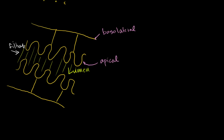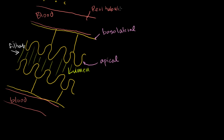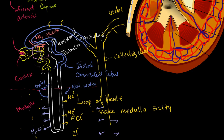On the other sides of these cells we have our peritubular capillaries — that's another fancy word. Peri means around, like perimeter, so these capillaries go around the tubes. They're porous, and this is actually blood flow right here. When things get secreted or reabsorbed out of the nephrons, they go into those capillaries. So this is our peritubular capillary, surrounding the proximal convoluted tubule.